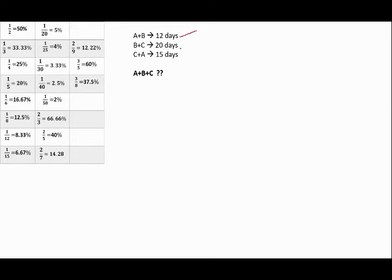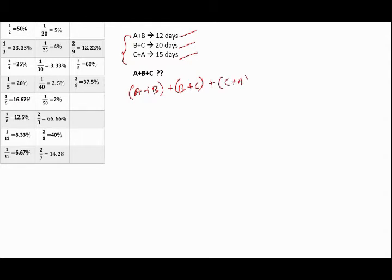Let's take another example — it's almost an intermediate level question. A and B can do a work in 12 days, B and C can do the same work in 20 days, and C and A can do the same work in 15 days. Now if you're familiar with solving such linear equations, what you do is add the three values: (A+B) + (B+C) + (C+A). I'm just writing here to explain how things actually work — you don't have to write all this if you remember these values. I'll give you about five to seven seconds to try solving this question without using a pen.